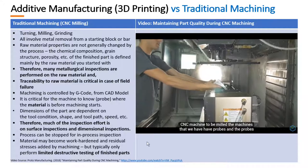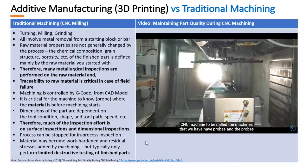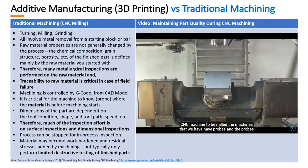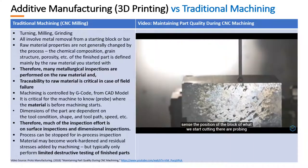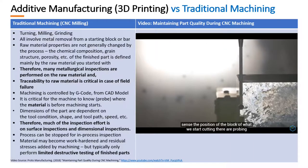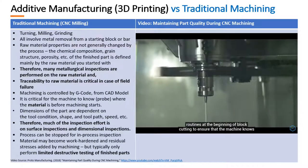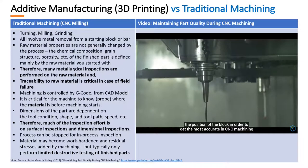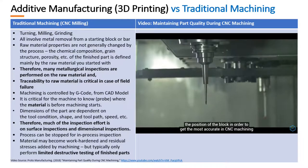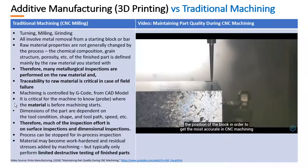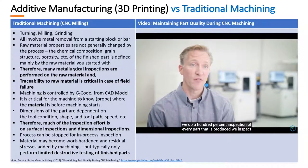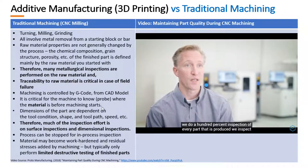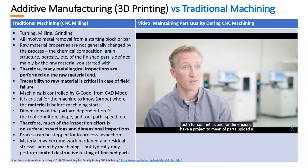With a block in a CNC machine to be milled, the machines have probes that sense the position of the block before cutting starts. There are probing routines at the beginning to ensure the machine knows the block's position in order to get the most accurate cut. In CNC machining, they do 100% inspection of every part produced, inspecting both for cosmetics and for dimensions.